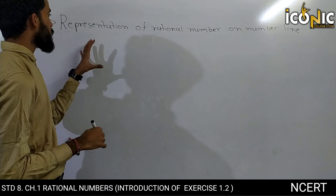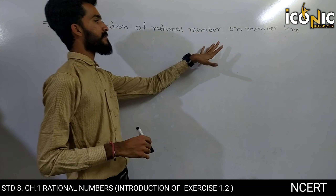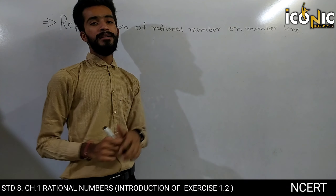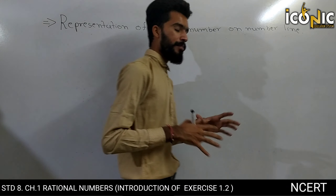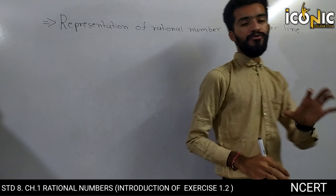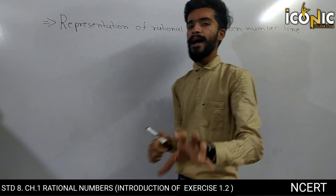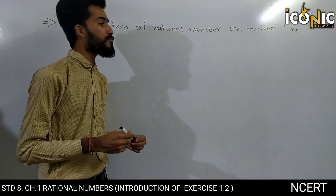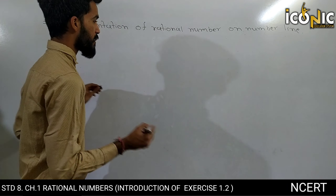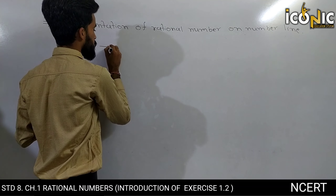Hello students, our today's topic is representation of rational numbers on a number line. Yaani ki, humeh rational number ko number line ke upar represent karna hai. Aaj tak humne whole numbers ko, integers ko number line ke upar represent kiya hai. Toh hum kaise kar dete?